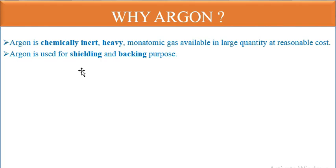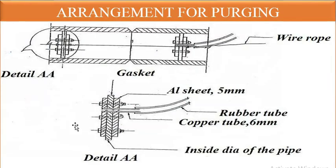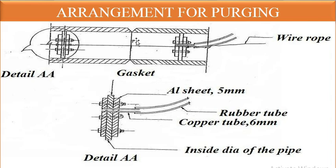The arrangement for purging: the joint is closed with an aluminium seat of 5 mm thickness. A rubber tube carries the argon gas inside the pipe, with a cover tube of 6 mm. This blocks the air inside the pipe so that when argon fills the space, it is sealed from the outside. This is the full arrangement for purging.